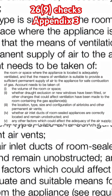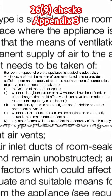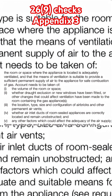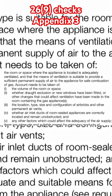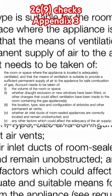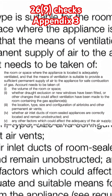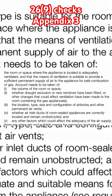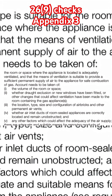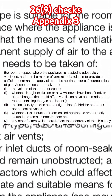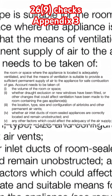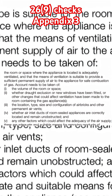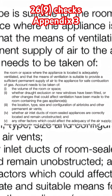Account needs to be taken of: C1, the volume of the room or space; C2, where draft exclusion or new windows have been fitted, or other changes that could affect ventilation have been made to the room containing the gas appliance or appliances; and C3, the location, type, size and configuration of air bricks and other permanent air vents.